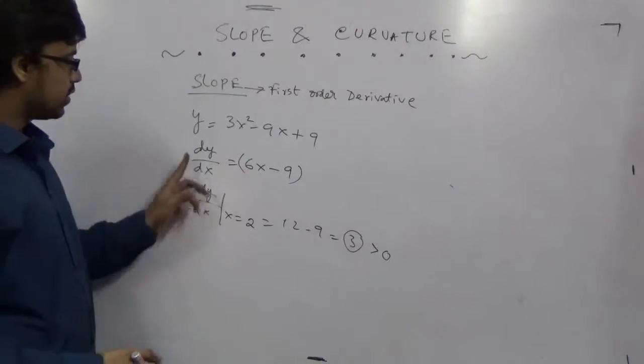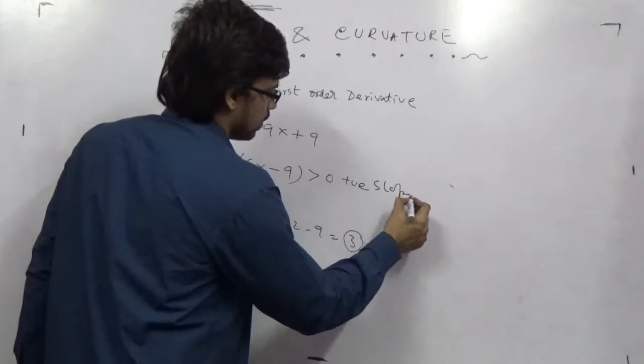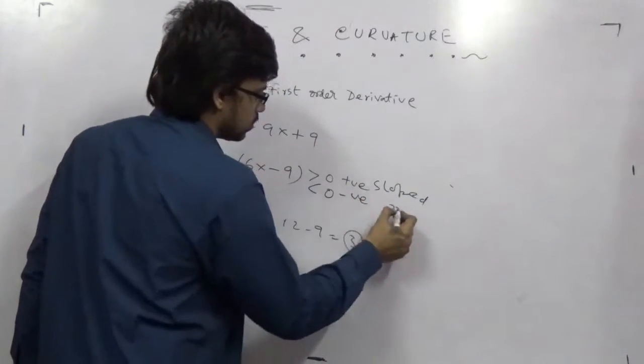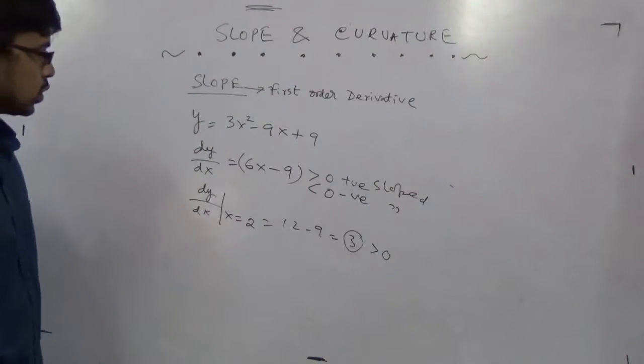If dy/dx is greater than 0, we call it positively sloped. And if it's less than 0, we call it negatively sloped. So this is the basic formation of a slope.